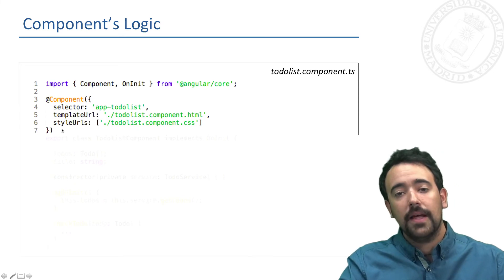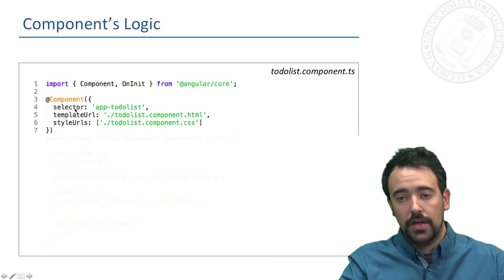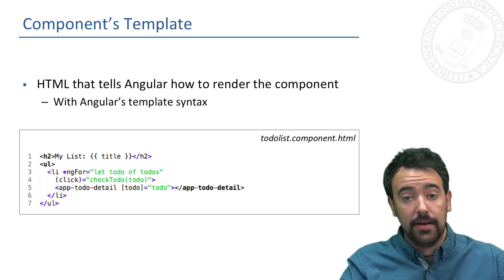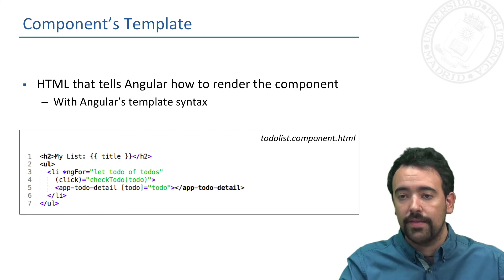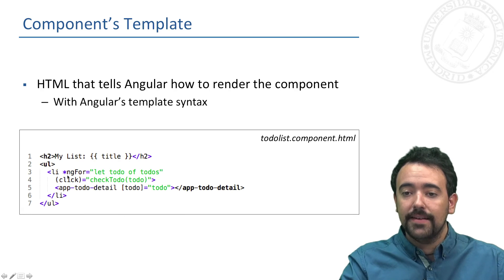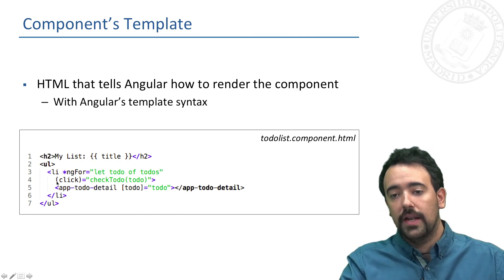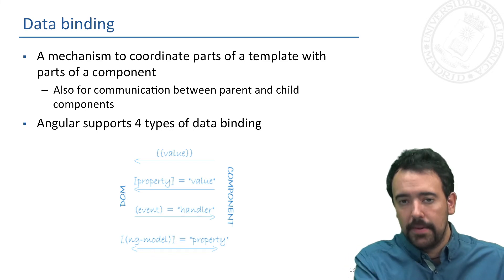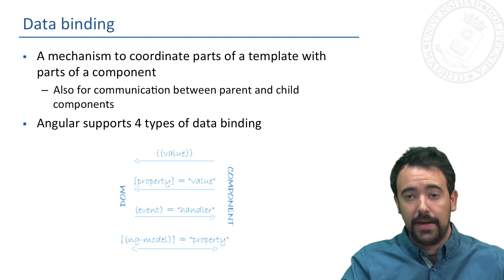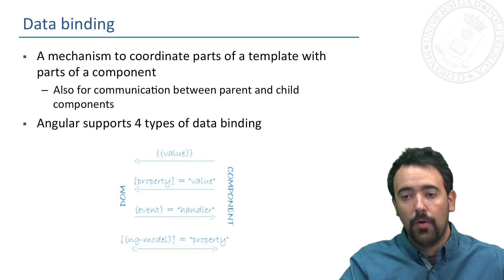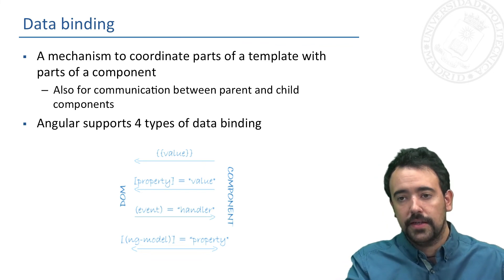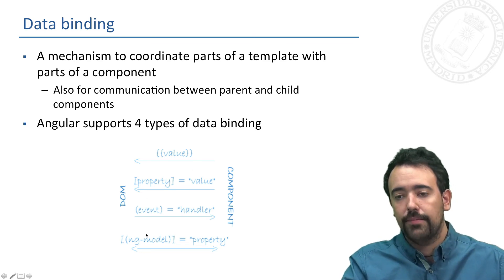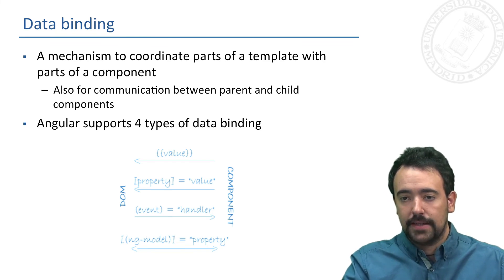The metadata of the component is configured using a component decorator. The template is just an HTML file that tells Angular how to render the component, and we add a set of extensions that we will study later. For managing the communication between the template and the logic, Angular uses a feature called data binding, which also allows us to communicate between components — parents and child components. Angular supports four types of data binding, as shown in this figure.